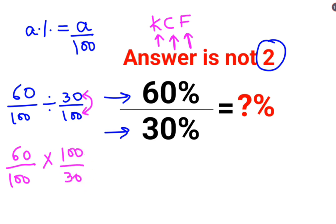So, now what do we get? Here, if you see this and this gets cancelled, this 30 goes into 30 once and into 60 twice. So, yes, the answer comes out to be 2 but yet I have written that it is not 2.